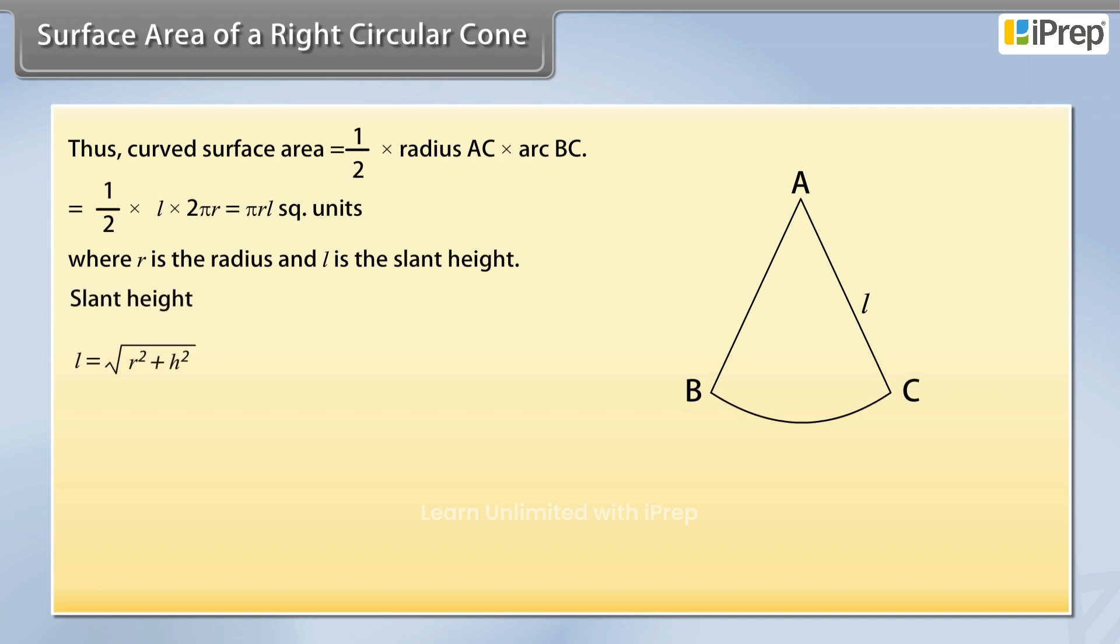And slant height L equals square root of R² plus H². Since area of the base is πR², so total surface area is equal to πRL + πR² = πR(L + R).